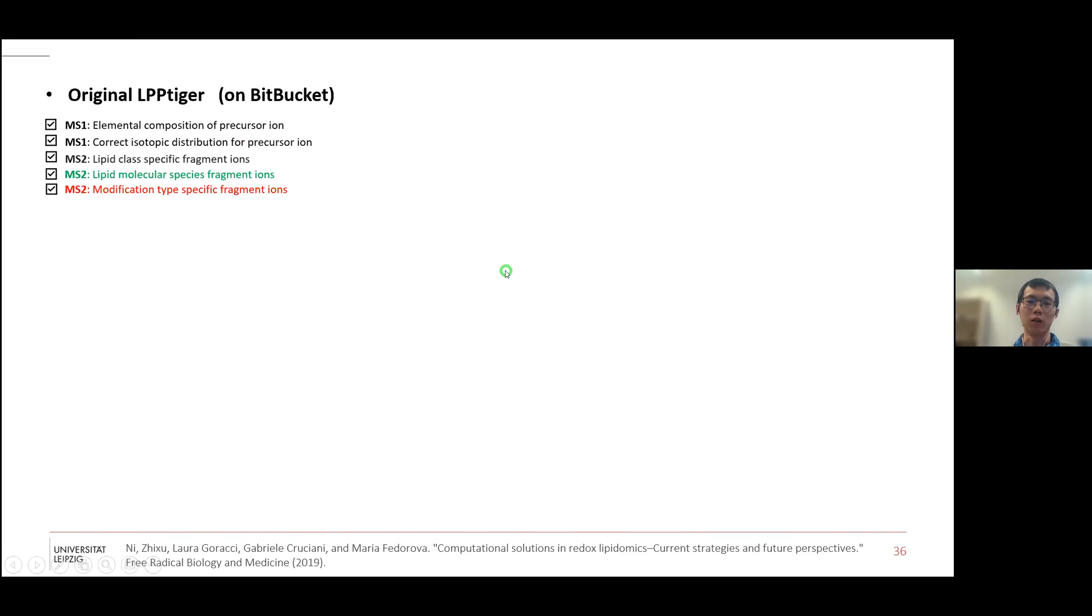So this is a very fast tutorial about the original LPP Tiger, which is published on the Bitbucket website. We cover all these major things until the modification fragment times, so we know the modification types.